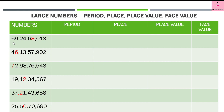Before we start, as I have been telling you, we must first read the number. So let's read the number — this number is 69 crore 24 lakh 68 thousand 13. So 8 is in the thousands period, because this is the ones period and this is the thousands period. The period of 8 is thousands, and the place is 1000.